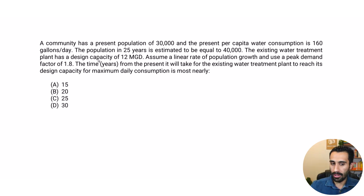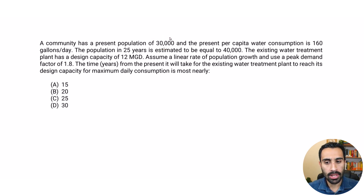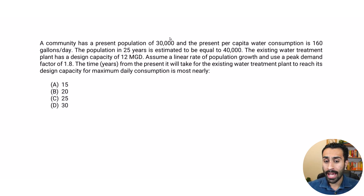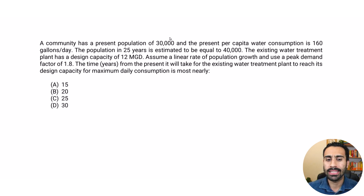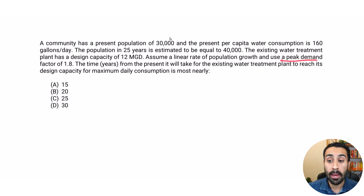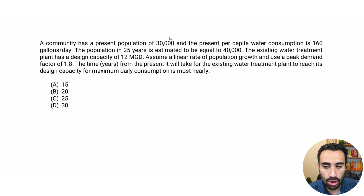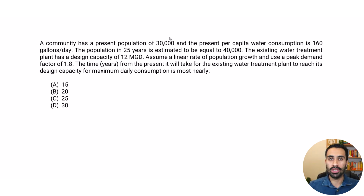Here we go. So what we have is a community with a present population of 30,000 and the present per capita water consumption is 160 gallons per day. The population in 25 years is estimated to equal 40,000. The existing water treatment plant has a design capacity of 12 MGD — million gallons per day — assume a linear rate of population growth and use a peak demand factor of 1.8. The time in years from the present it will take for the existing water treatment plant to reach its design capacity for maximum daily consumption is most nearly what?